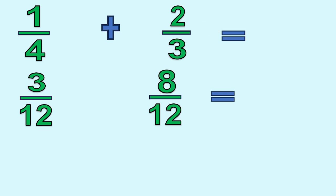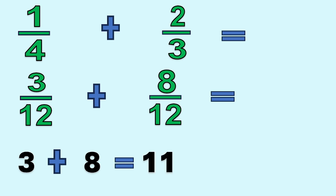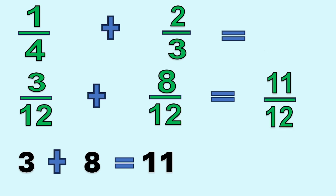We can add now because the denominators are already the same — we have 12 and 12. Add the numerators: 3 plus 8 equals 11. Then copy the least common denominator 12. So 1 fourth plus 2 thirds equals 11 twelfths.